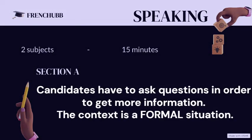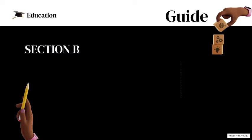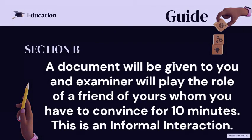For the speaking section, a document will be given to all candidates and candidates have to ask questions in order to get more information. The context is a formal situation and they have to ask at least 10 to 12 questions. In section B, a document will be given to the candidate and the examiner will play the role of a friend that you have to convince for 10 minutes. This is an informal interaction.